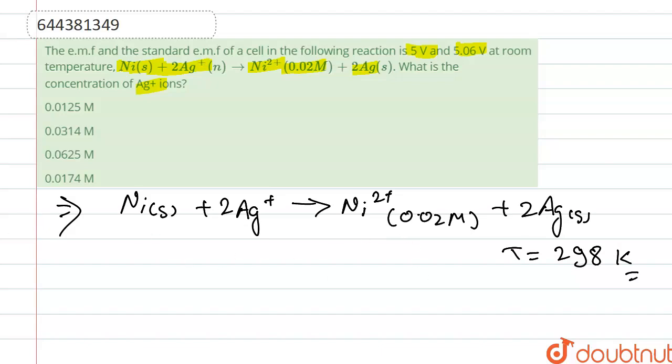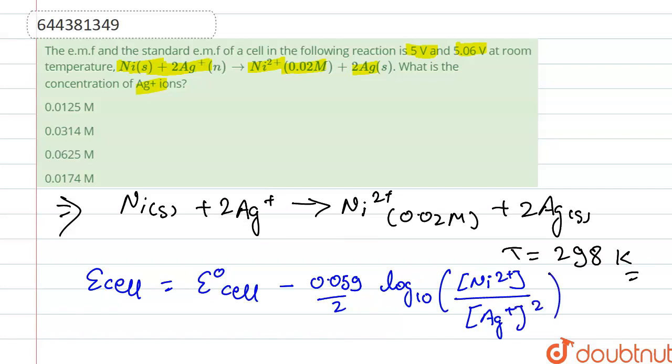We write the cell reaction. E cell = E naught cell minus 0.059 upon 2 log base 10 of concentration of Ni2+ upon concentration of Ag+ whole square.